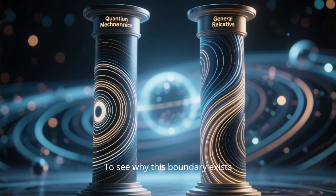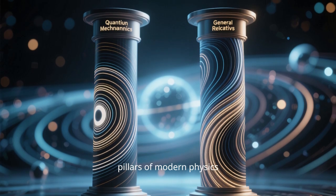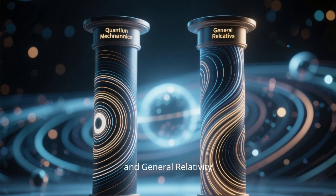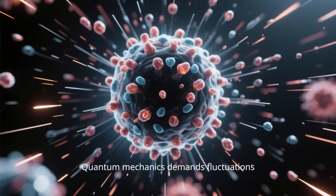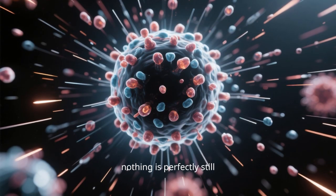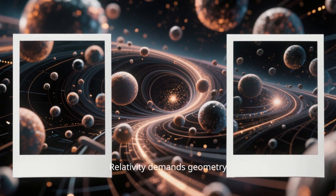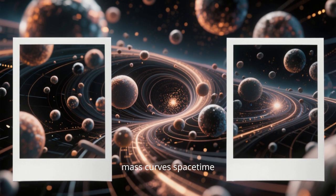To see why this boundary exists, combine the two great pillars of modern physics: quantum mechanics and general relativity. Quantum mechanics demands fluctuations. Nothing is perfectly still, not even vacuum. Relativity demands geometry. Mass curves space-time.